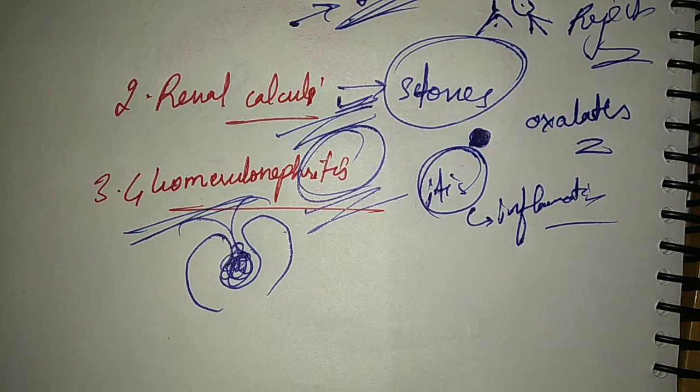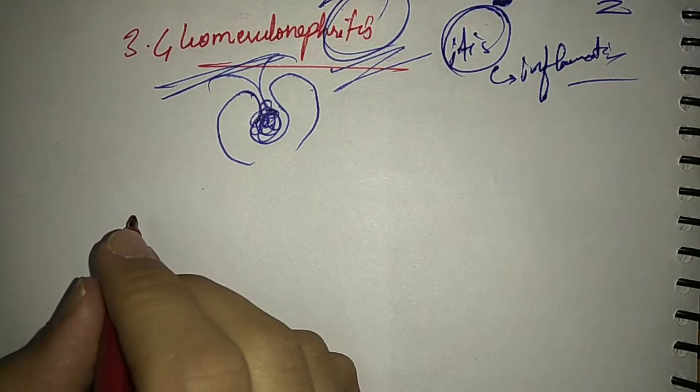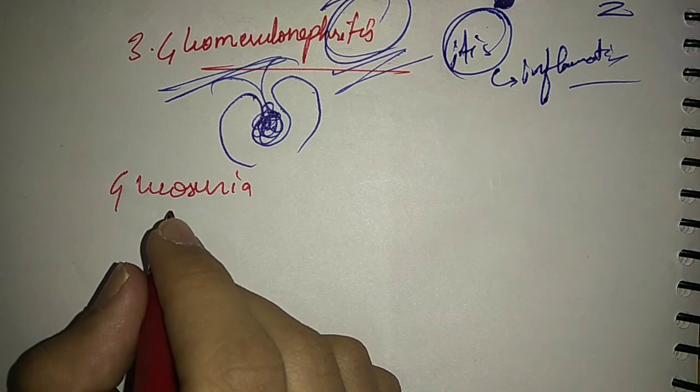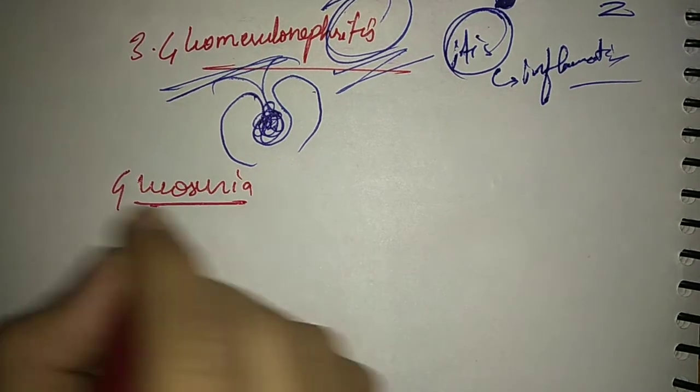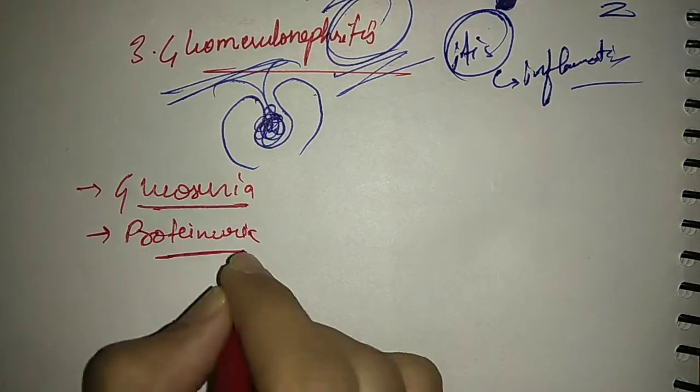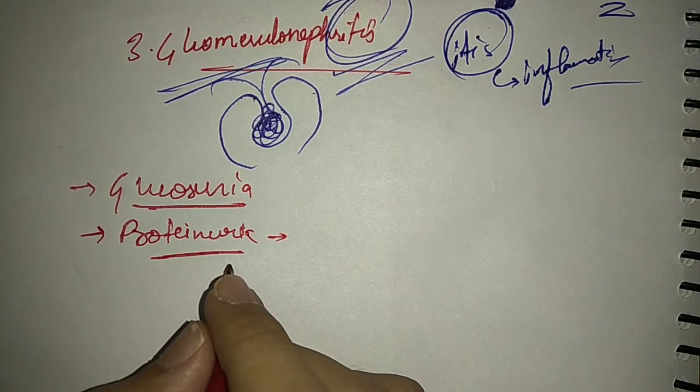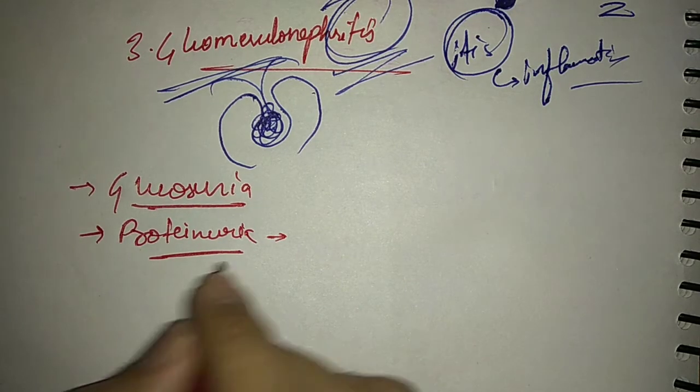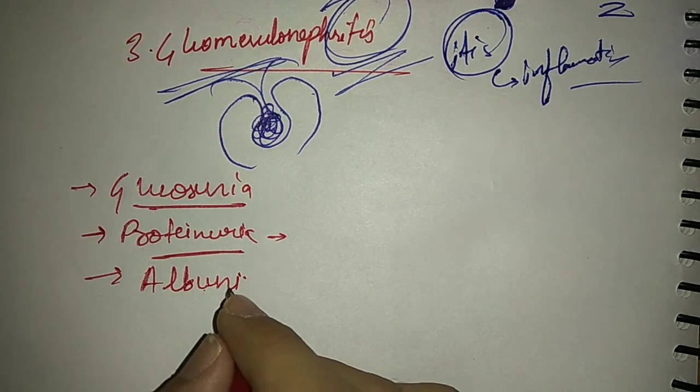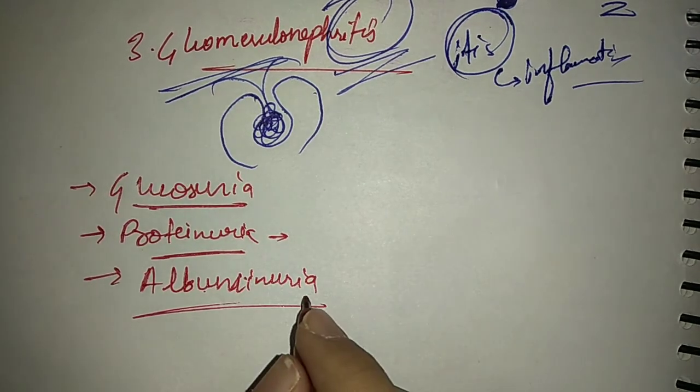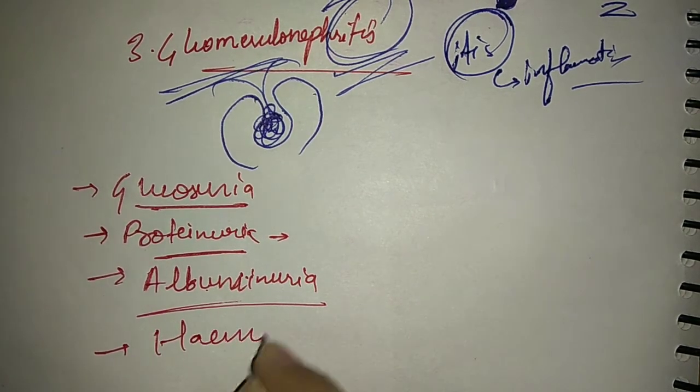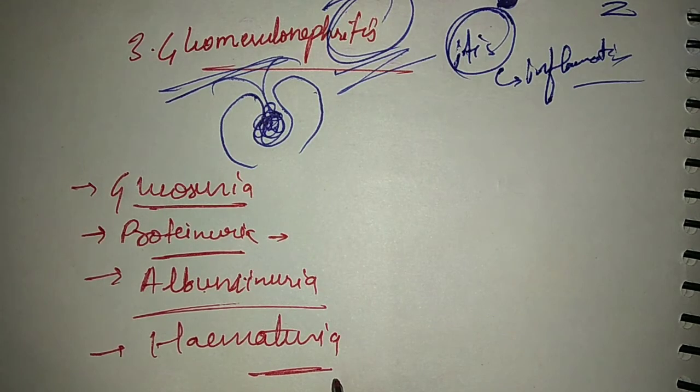Now there are some terms related with excretion. Glucosuria is the presence of excess amount of glucose in urine, more than it should be. Proteinuria is when more protein is present in urine than should be. Albuminuria means albumin present in the urine. Hematuria is the presence of RBCs in urine.